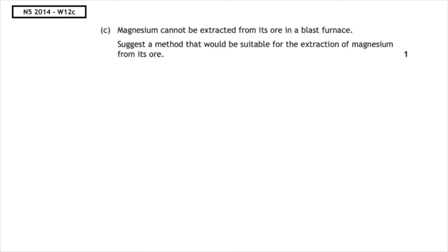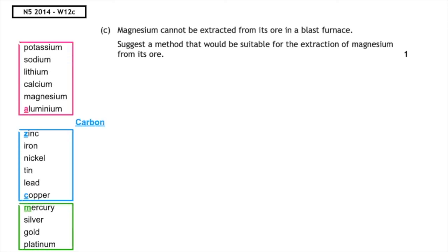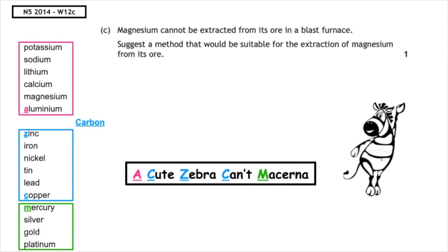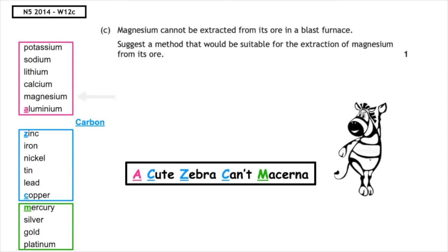This past paper question is from the National 5, 2014 paper, question 12c. Magnesium cannot be extracted from its ore in a blast furnace. Suggest a method that would be suitable for the extraction of magnesium from its ore. Remember, 'a cute zebra can't Macarena.' Aluminium and above, we would need to use electrolysis. Magnesium is found above aluminium, so we would have to use that extraction method.